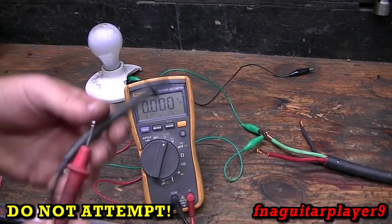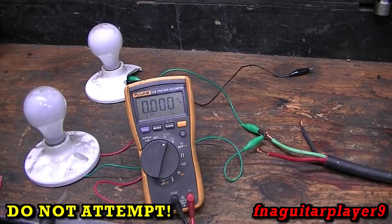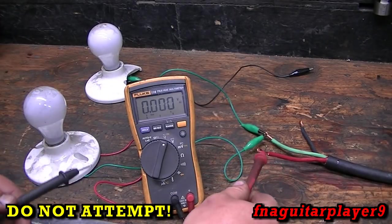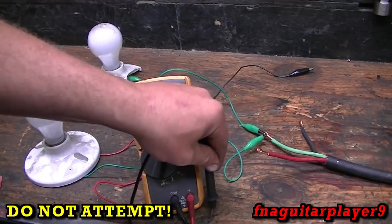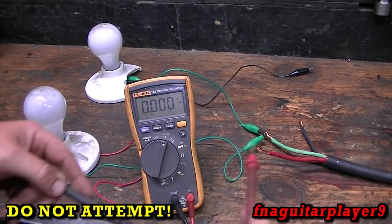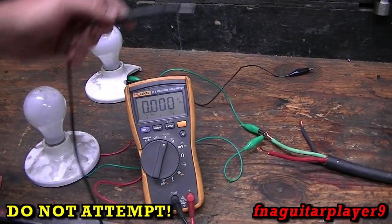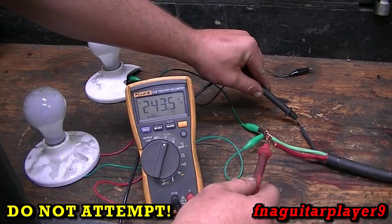So you get two 120 circuits adding together to get 240, but you never have 240 volts to ground. You can stick this in the ground and you're not going to pick up 240. You only get 120 volts to ground. You only get 240 across the two phases like this.